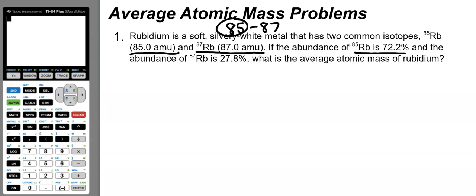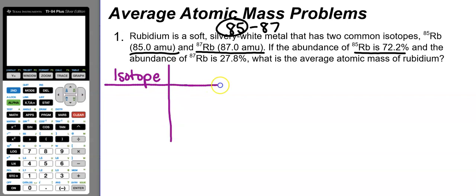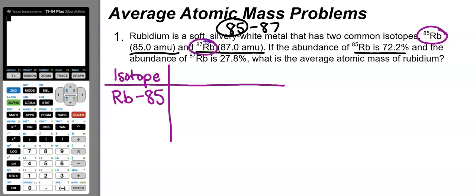To organize this problem, I like to set up a table. The first column is the isotope name. I'll list the isotopes from the problem: rubidium-85, written in isotope notation as Rb-85, and rubidium-87, written as Rb-87.